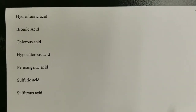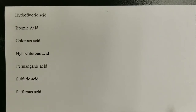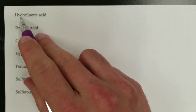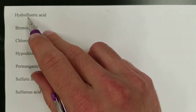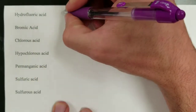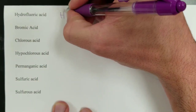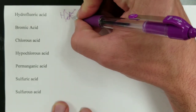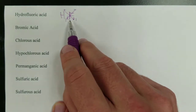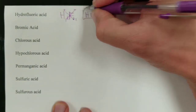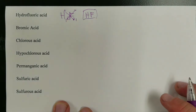Now, how do you take a name and turn it into a formula? Let's start with hydrofluoric acid. The 'hydro' part means there's no oxygen. 'Fluoric' tells us fluorine is involved, and 'acid' tells us there's an H. H is 1-plus, fluorine is 1-minus, so we need one of each — therefore the formula is HF.